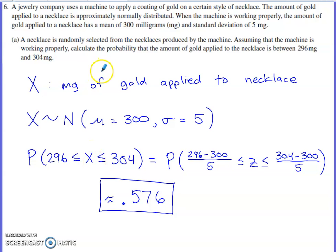From 2023, number six says that we've got a jewelry company that's using a machine that applies gold to a certain type of necklace. The amount of gold applied to the necklace is normally distributed. When the machine is working properly, the amount of gold applied to the necklace has a mean of 300 milligrams and a standard deviation of 5 milligrams. They're going to select a necklace at random that's produced by the machine. Assuming the machine is working properly, calculate the probability that the amount of gold applied to the necklace is between 296 milligrams and 304 milligrams.